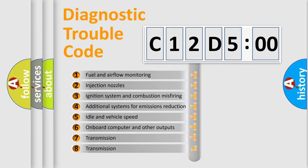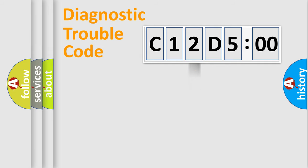The third character specifies a subset of errors. The distribution shown is valid only for the standardized DTC code. Only the last two characters define the specific fault of the group.